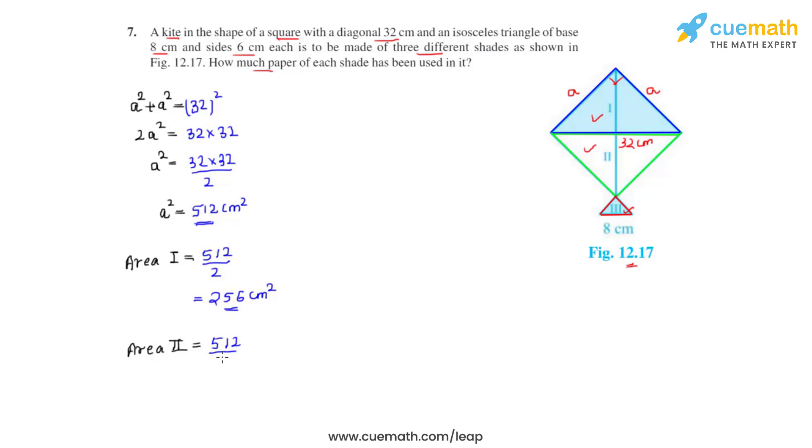Also the area of region 2 is 512 divided by 2, which comes as 256 centimeter square. So this much paper has been used to make the triangle for shade 1 and shade 2. Now let's try and find the area for shade 3.